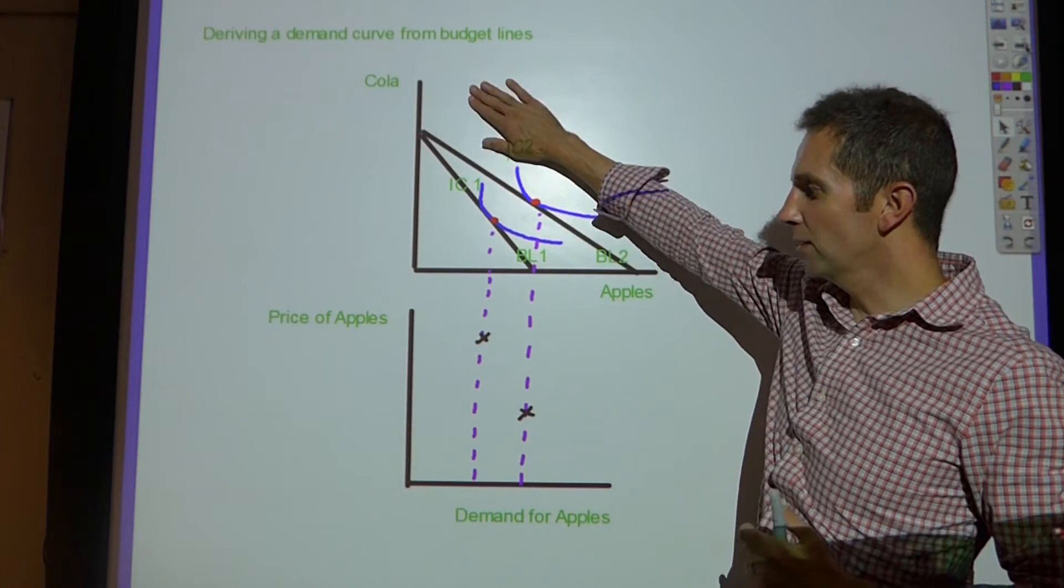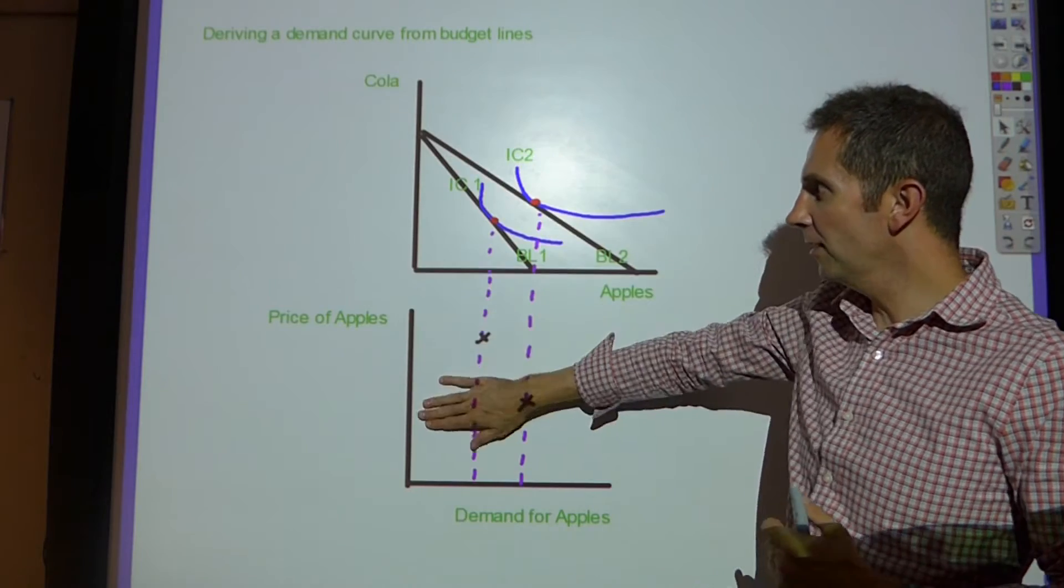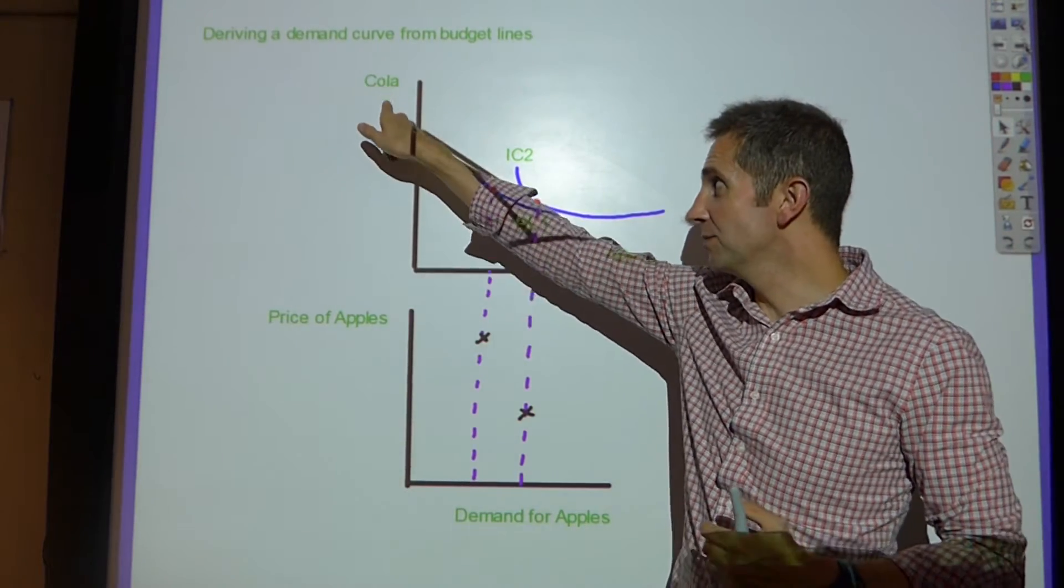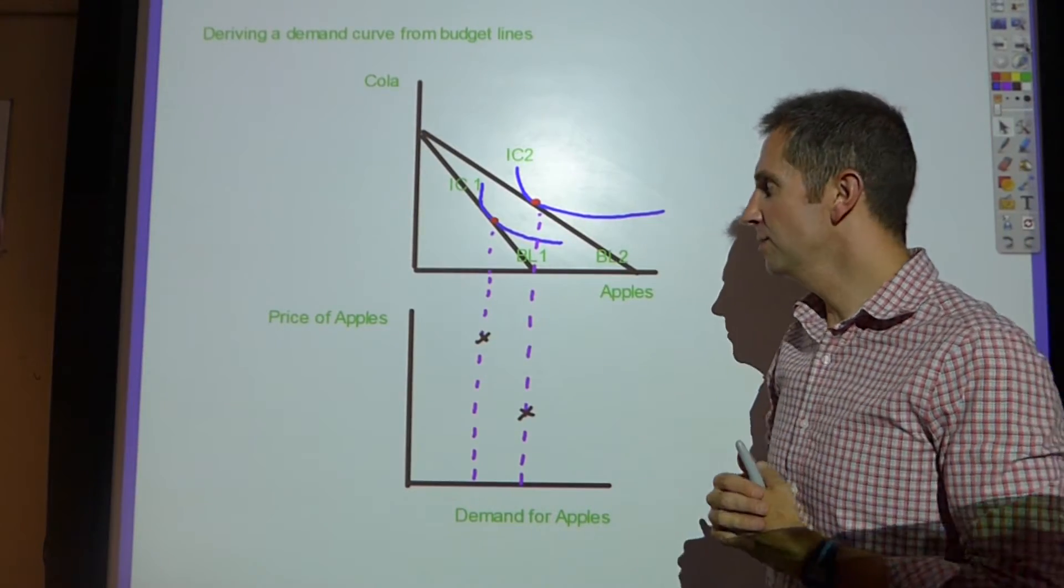So I've got two diagrams here as you can see, one beneath the other. And here we have the usual suspects in terms of cola and apples, just to stick with the theme in the OCR textbook.